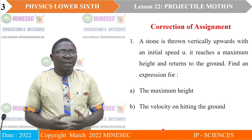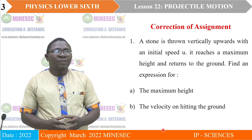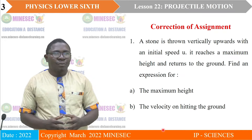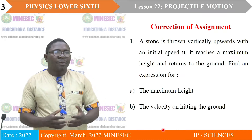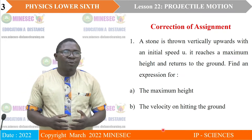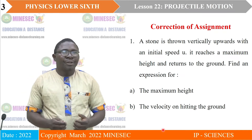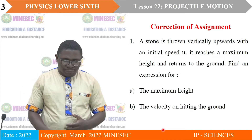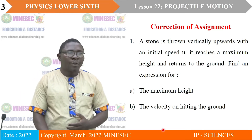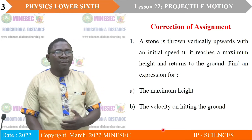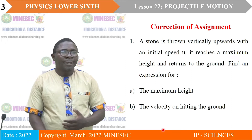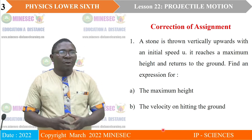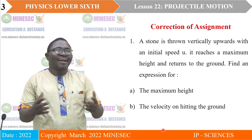Question 1. A stone is thrown vertically upward with an initial speed u. It reaches a maximum height and returns to the ground. Find an expression for A, the maximum height, and B, the velocity on hitting the ground.